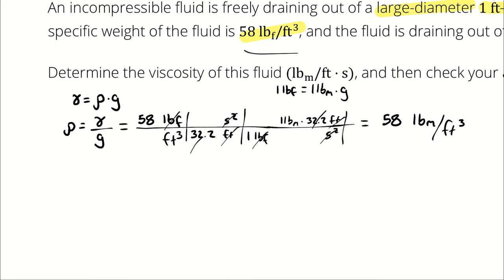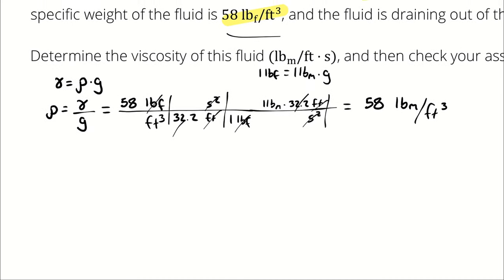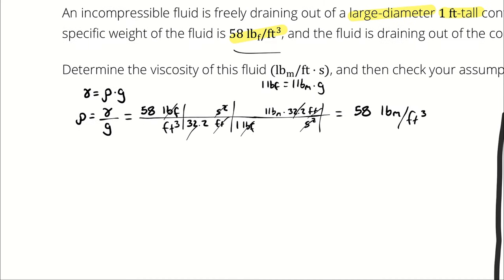Since we don't know the dynamic viscosity and can't look one up because we don't know what fluid this is yet, we can't calculate the Reynolds number yet. So we'll have to make an assumption about laminar or turbulent flow to calculate what the viscosity would have been, use that to calculate a Reynolds number, check whether the flow regime assumption was correct, and if wrong, repeat the process. The next step is to calculate the friction factor based on the conservation of energy equation.